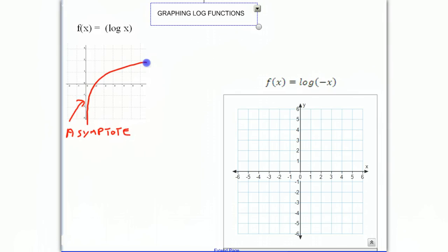And the x-intercept is at 1. In our first example, we have the log of negative x, and we've learned that reflects the graph in the x direction across the y-axis.